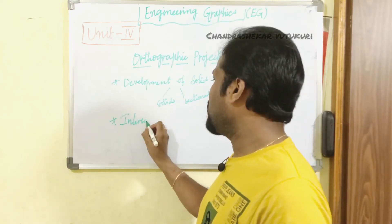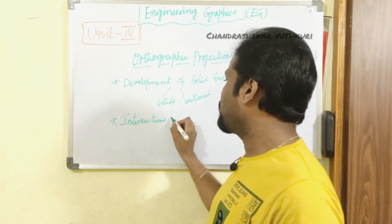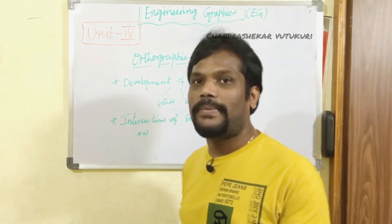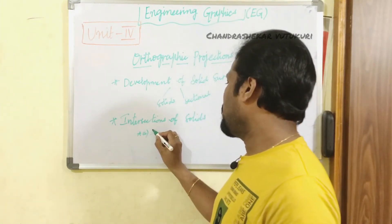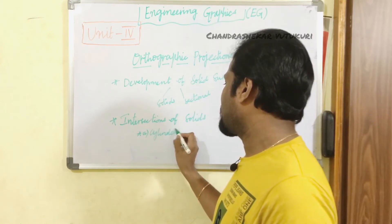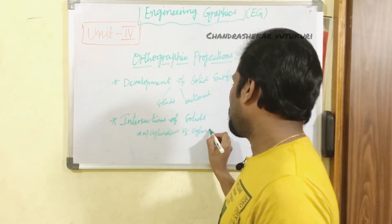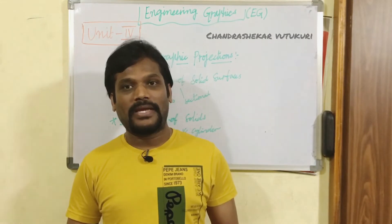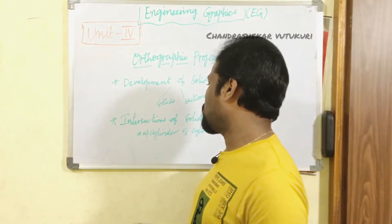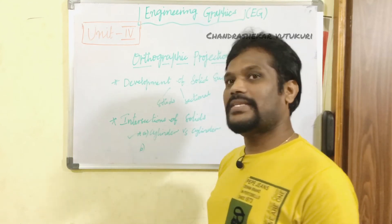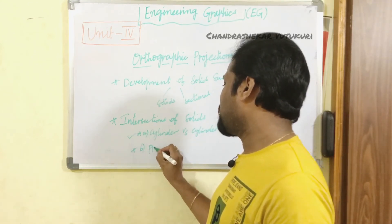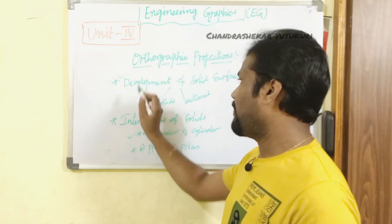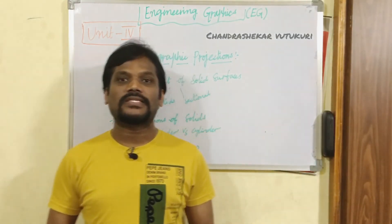The next part of Unit 4 is all about the intersections of solids. If it is asked, it is said to be a very important gunshot question. As per the JNTU syllabus, we have only two topics for intersection of solids: cylinder versus cylinder, and prism versus prism. Two to three problems of similar concepts will be asked. Go through the playlist and work out the intersections of solids.